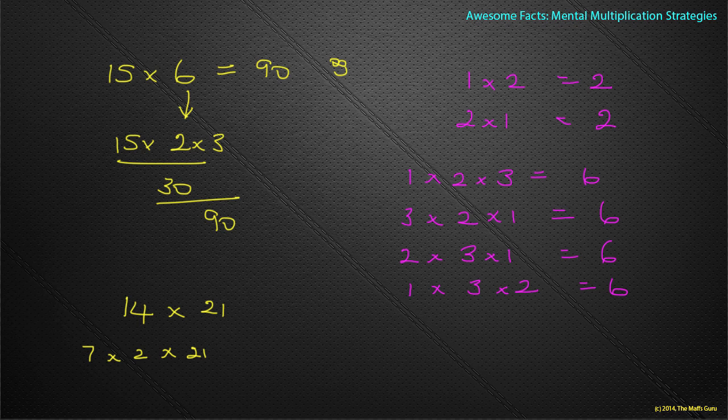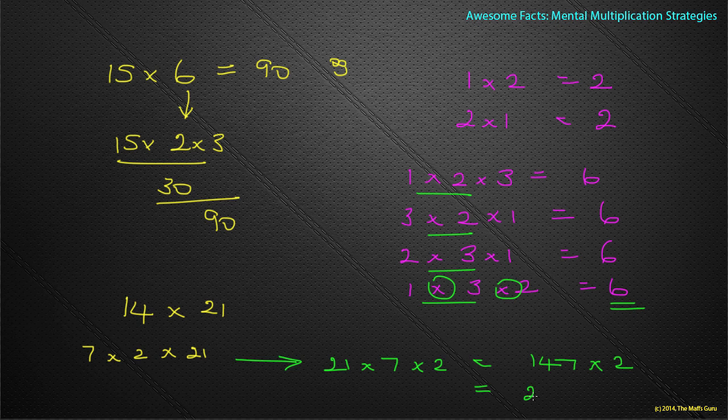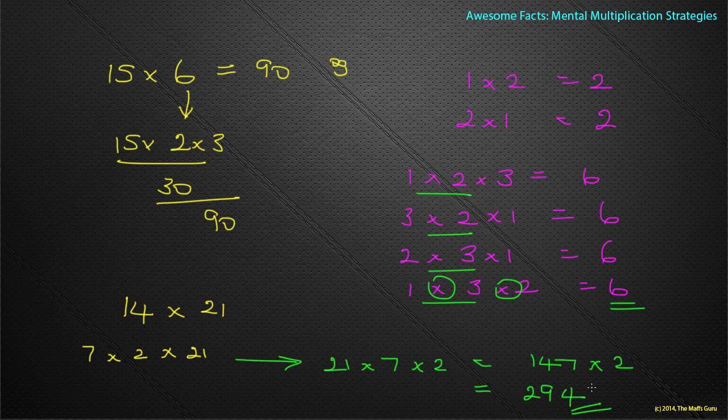Hopefully, by now, what we've noticed is that it doesn't matter which order the numbers come in, if they all have multiplication signs between them, the answer comes up to be the same. So I can now rewrite 7 times 2 times 21, as 21 times 7 times 2. That's a little tough but let's think: seven times 21 is 147 and I can double that to give me 294.